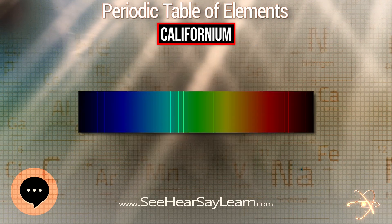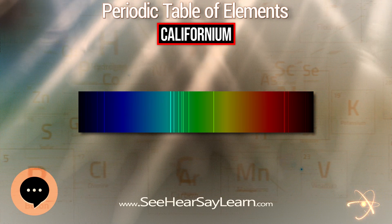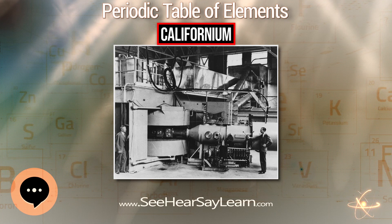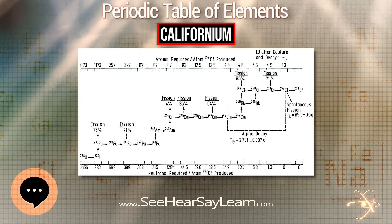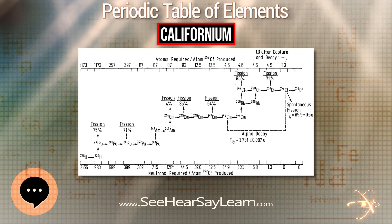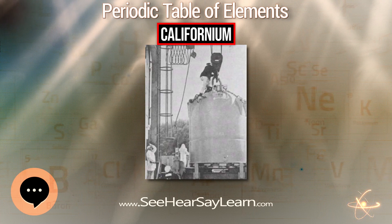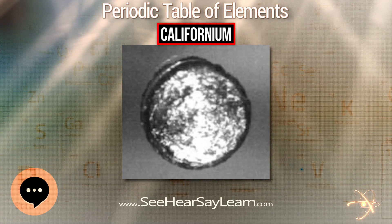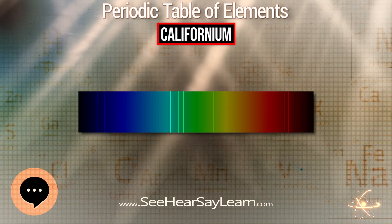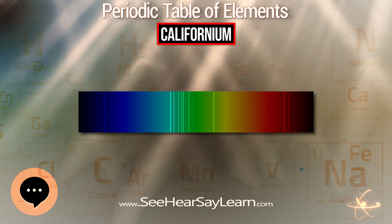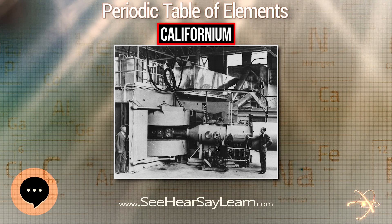Californium-252 is a very strong neutron emitter, which makes it extremely radioactive and harmful. It undergoes alpha decay 96.9 percent of the time to form curium-248, while the remaining 3.1 percent of decays are spontaneous fission. One microgram of californium-252 emits 2.3 million neutrons per second, an average of 3.7 neutrons per spontaneous fission. Most other isotopes of californium decay to isotopes of curium via alpha decay.